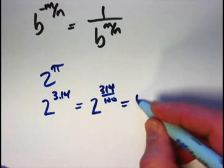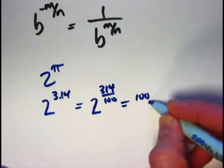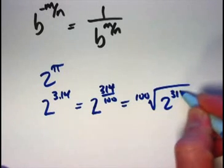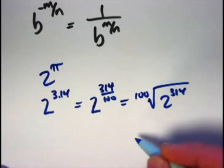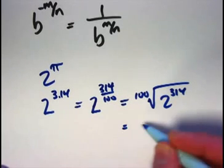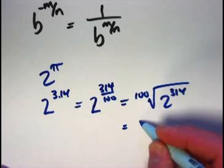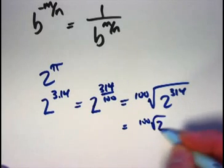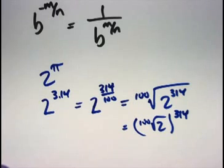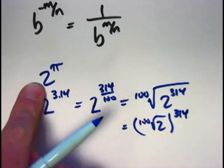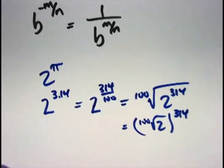I could say this is going to be the 100th root of 2 to the 314th power, by what I've said already in this video. Or what would probably be easier to figure out is to take the 100th root of 2 and raise it to the 314th power. That's not going to be equal to what 2 to the pi equals, but it should be an approximation to it, since pi is approximately 3.14.